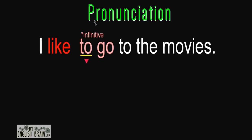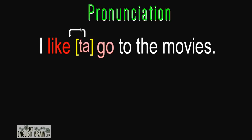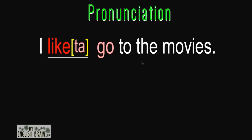Let's take a moment for pronunciation. With the infinitive 'to,' the infinitive always uses 'to,' but sometimes we do not say 'to' — we change the sound and say 'tuh.' We take the 'tuh' sound and put it on the previous verb. So for 'like to,' we say 'liketa.' Repeat the sentence: I like to go to the movies.